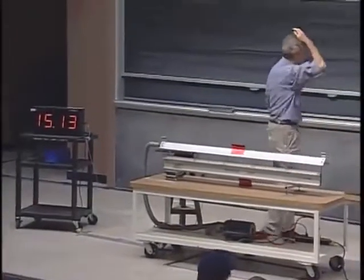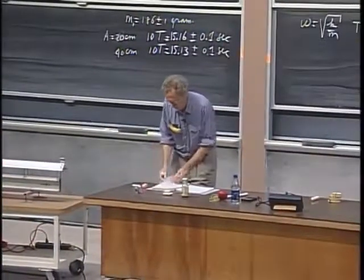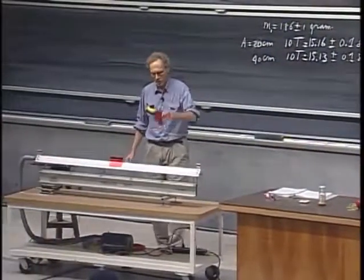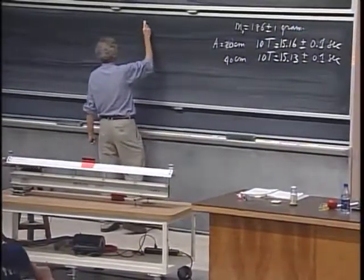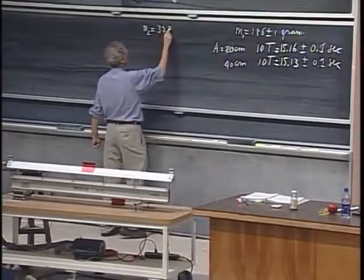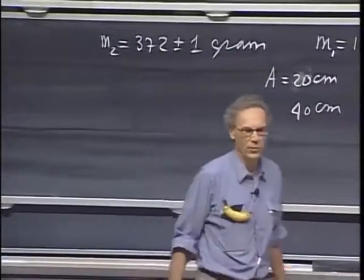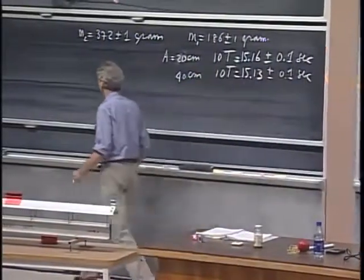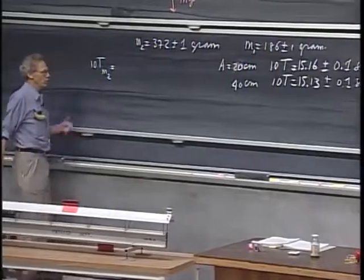Now I will show you something else, which is quite interesting, and that is how the behavior of the period depends on the mass of the object. I have here another car which weighs roughly the same. I'm going to add the two together, and so we get M2 is about 372 plus or minus one gram. The plus or minus one comes in because our scale is no more accurate than one gram, so we put them both on the scale and we find this to be the uncertainty.